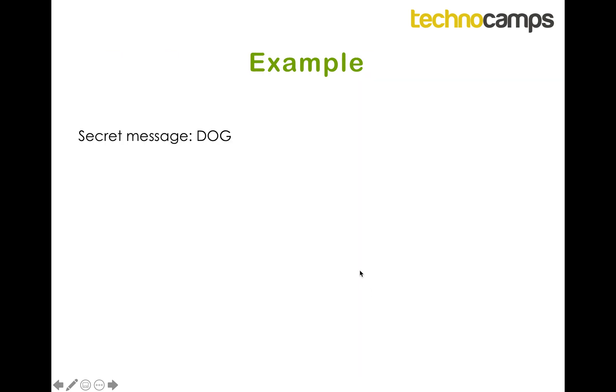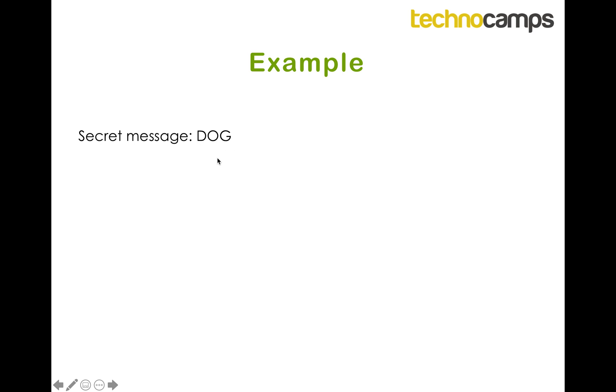So we'll do an example of that as well. Our secret message is DOG, converted into A's and B's using the table, we have D is converted to AAABB, O is converted to ABBBA, and G is converted to AABBA. Our boring message is wouldn't harm a fly. So DOG has three letters in it, so we need a boring message with three times five letters in it, which is 15 letters, and this has 15 letters in it.